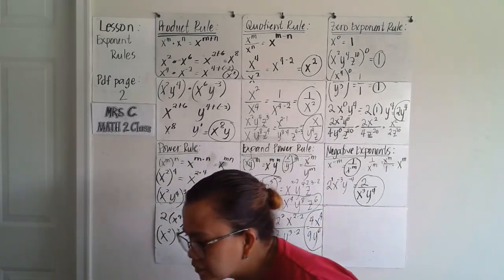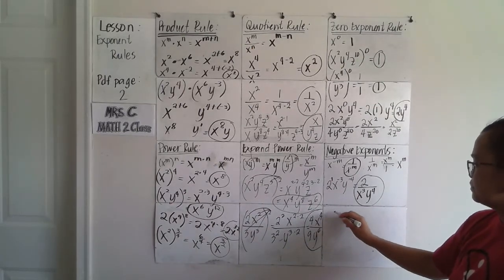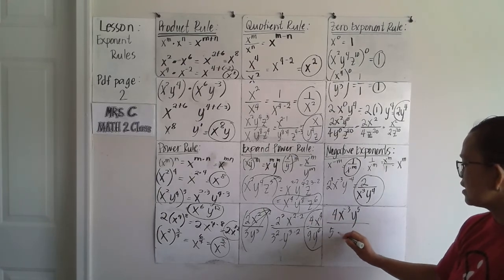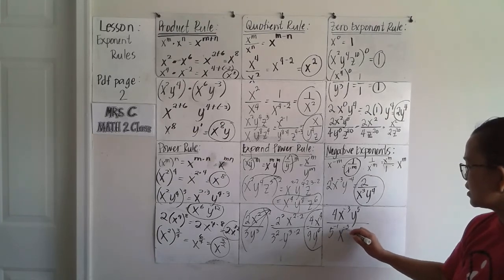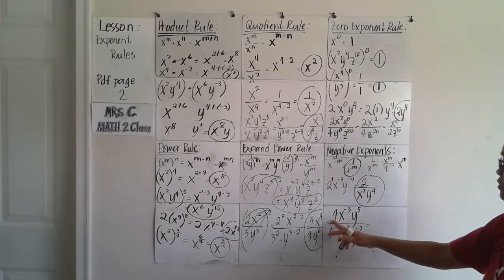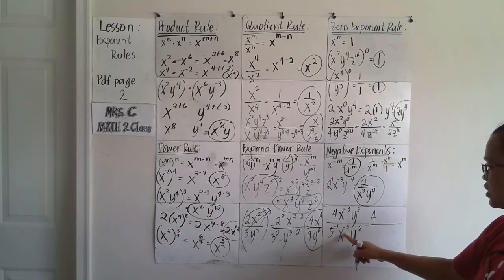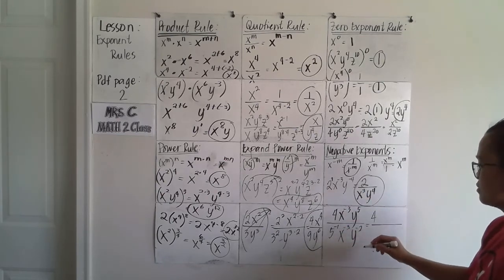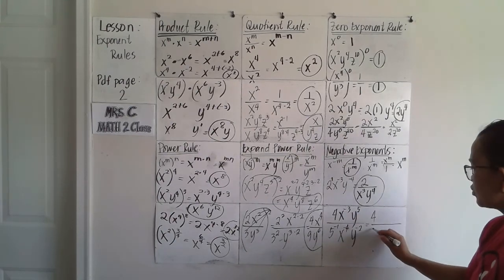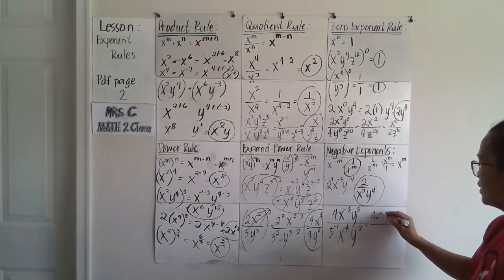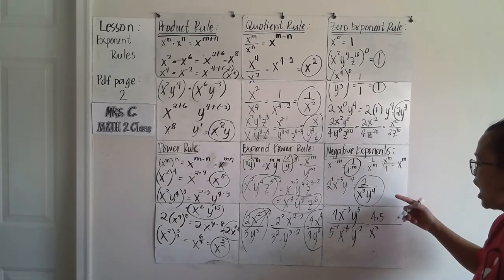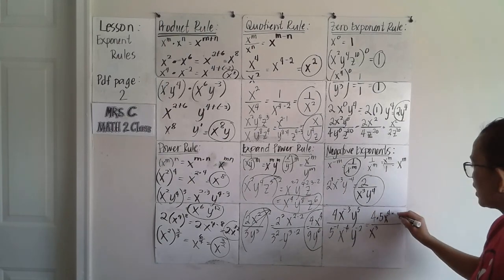One more example: 4x raised to negative 3, y raised to 5, over 5 raised to negative 1, x raised to negative 3, y raised to negative 2. Negative exponents move across the fraction bar. 4 stays on top; x to the negative 3 in the numerator pulls down to denominator as x cubed; 5 to the negative 1 in the denominator pulls up to numerator as 5; y to the 5th stays on top; x to the negative 3 in denominator pulls up; y to the negative 2 in denominator pulls up as y squared.